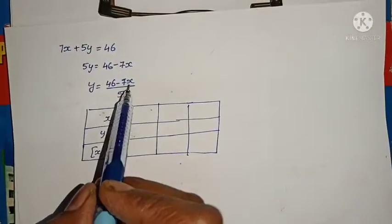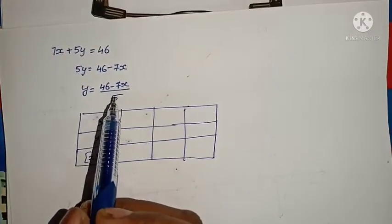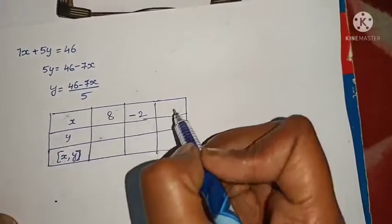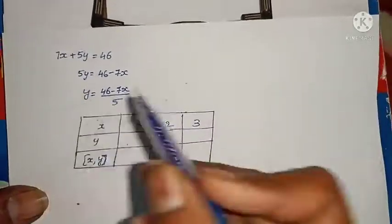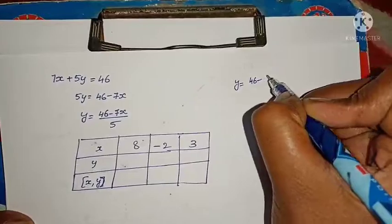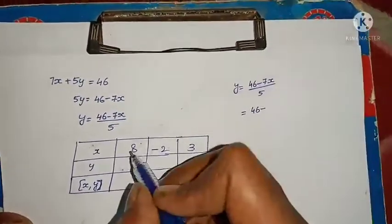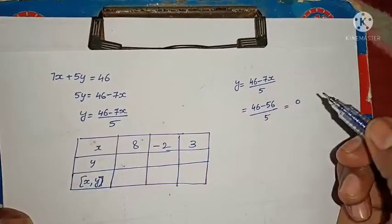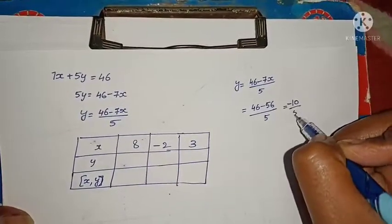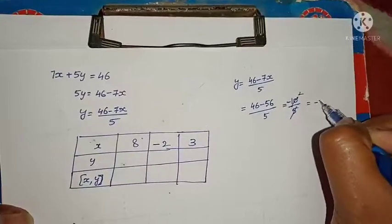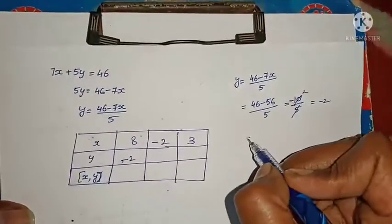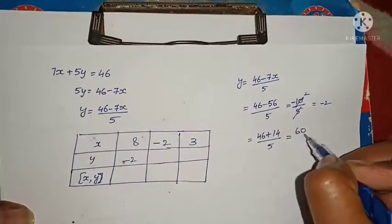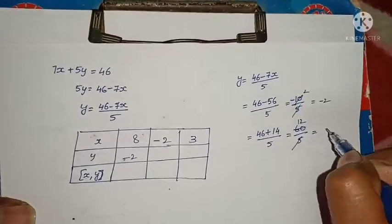For equation 1, substituting x equals 3: y equals (50 minus 15) divided by 7 equals 35 divided by 7 equals 5. Substituting x equals 10: y equals (50 minus 50) divided by 7 equals 0. Substituting x equals minus 4: y equals (50 plus 20) divided by 7 equals 70 divided by 7 equals 10. Points for equation 1: (3,5), (10,0), and (minus 4, 10).